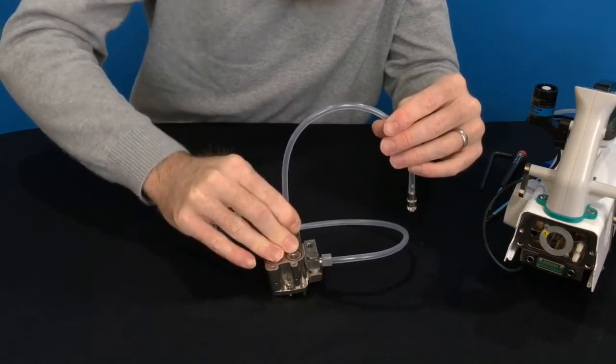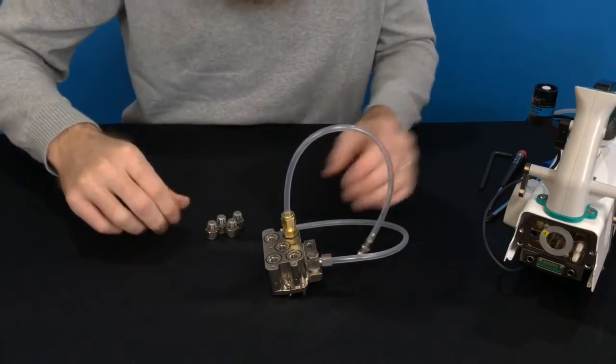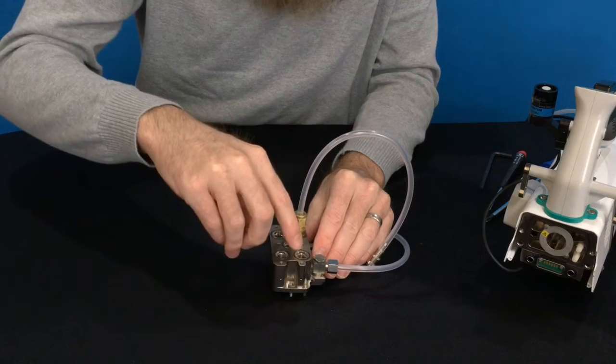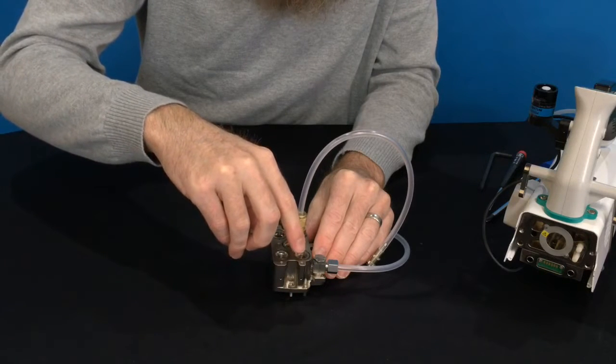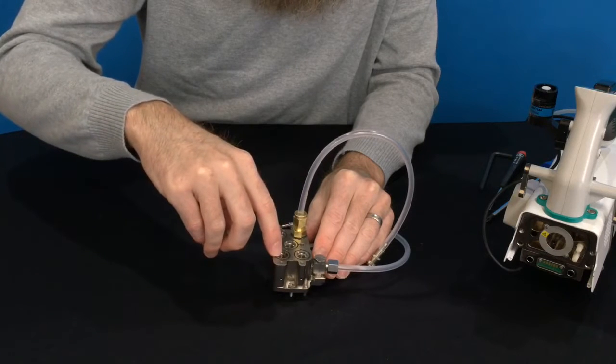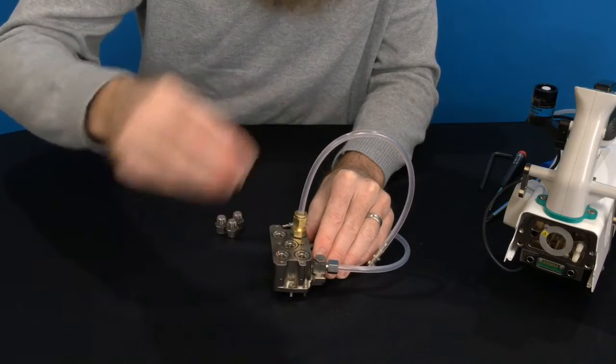And those really just need to be finger tight on the manifold because they compress an o-ring to seal. And then these four plugs are used to plug the ports that come from the mixing fan into the mixing fan, and then the air that would normally be coming from the sample path.